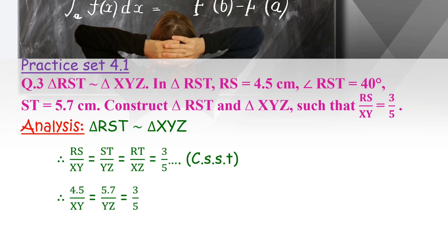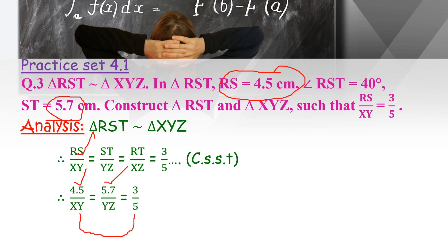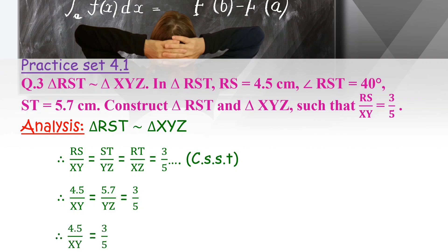Substituting, we get 4.5 upon XY equals 5.7 upon YZ equals 3 upon 5. RS is given as 4.5 centimeters and ST is given as 5.7 centimeters. To find XY, we equate the first and last ratios: 4.5 upon XY equals 3 upon 5.